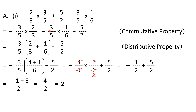Now I have both three-by-five terms together, so minus three by five is common. I take out minus three by five as a factor, leaving bracket two by three plus one by six close bracket, plus five by two. Taking LCM of three and six, which is six: two by three becomes four by six, plus one by six gives five by six. So the expression simplifies to minus three by five into five by six, plus five by two.